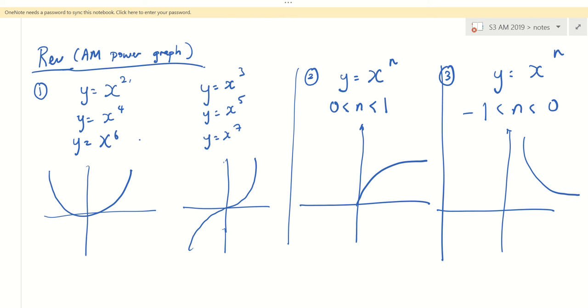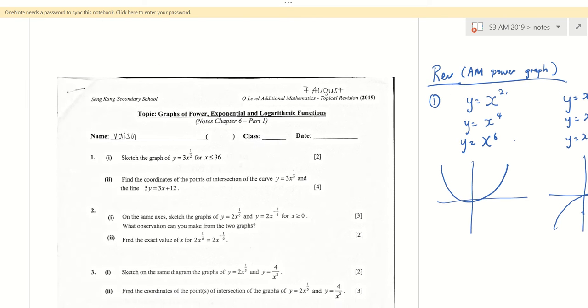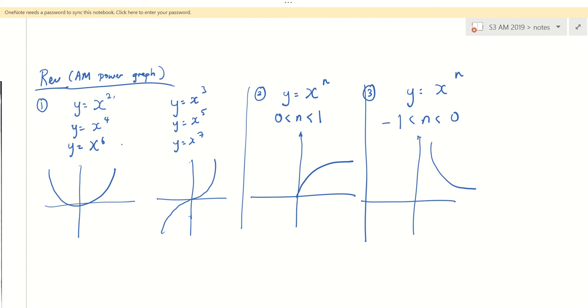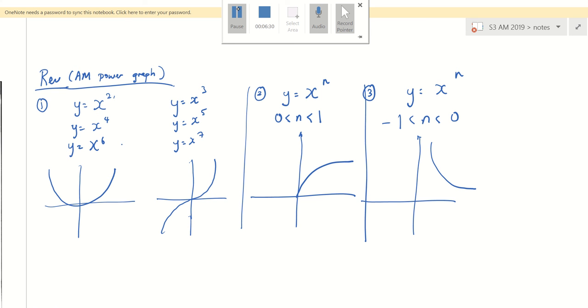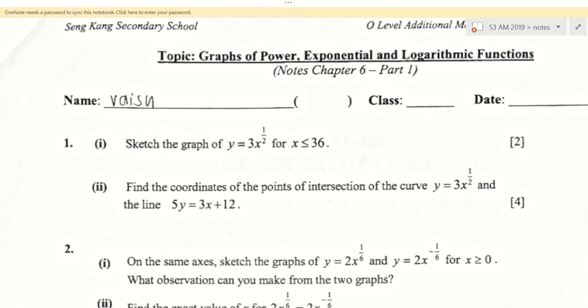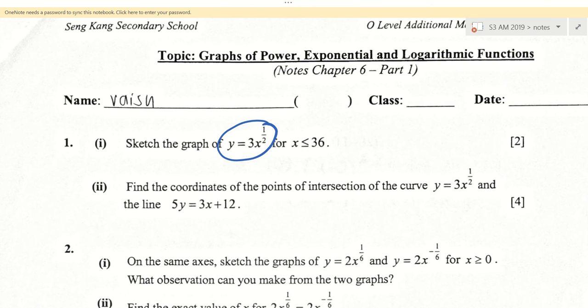Now, so if I look at the first one. The question. The question says x. This is a what? Fractional power, right? And the power is less than one. So what do you think the answer look like? Like that. Full stop. Just like that. That's the answer. Of course you label by writing y equals to 3x power half. This is the answer.